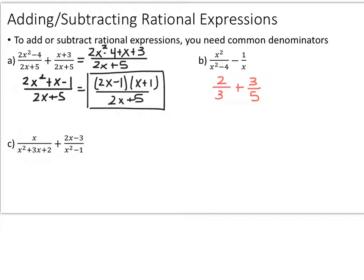This next example is x squared over x squared minus 4 minus 1 over x. Whenever the denominators are not factored completely, your first step is to factor them completely. Go ahead and pause the video and factor x squared minus 4. The denominator factors into x plus 2 times x minus 2, and we can see that there are no common factors between the two denominators — so they're completely unlike.